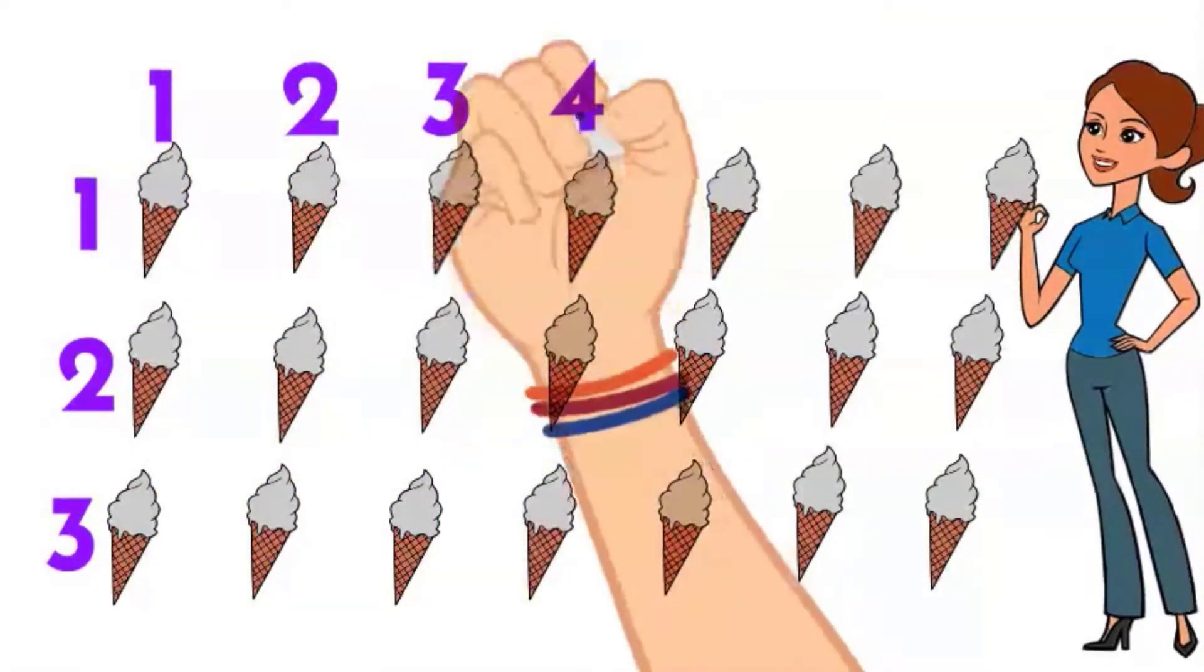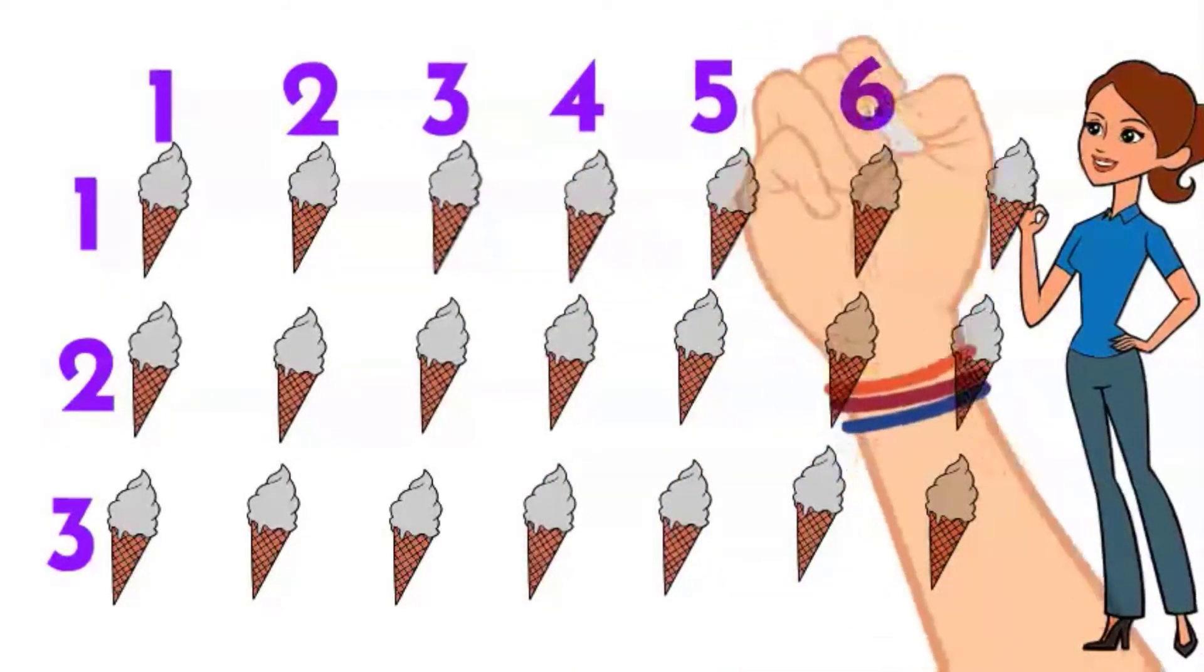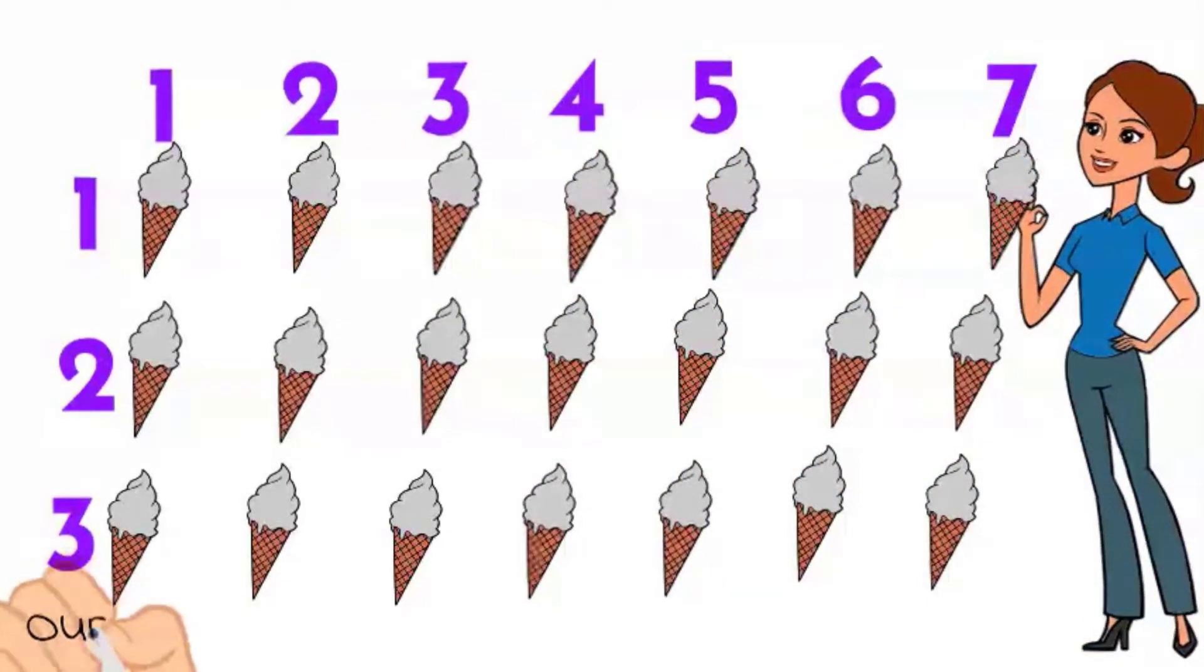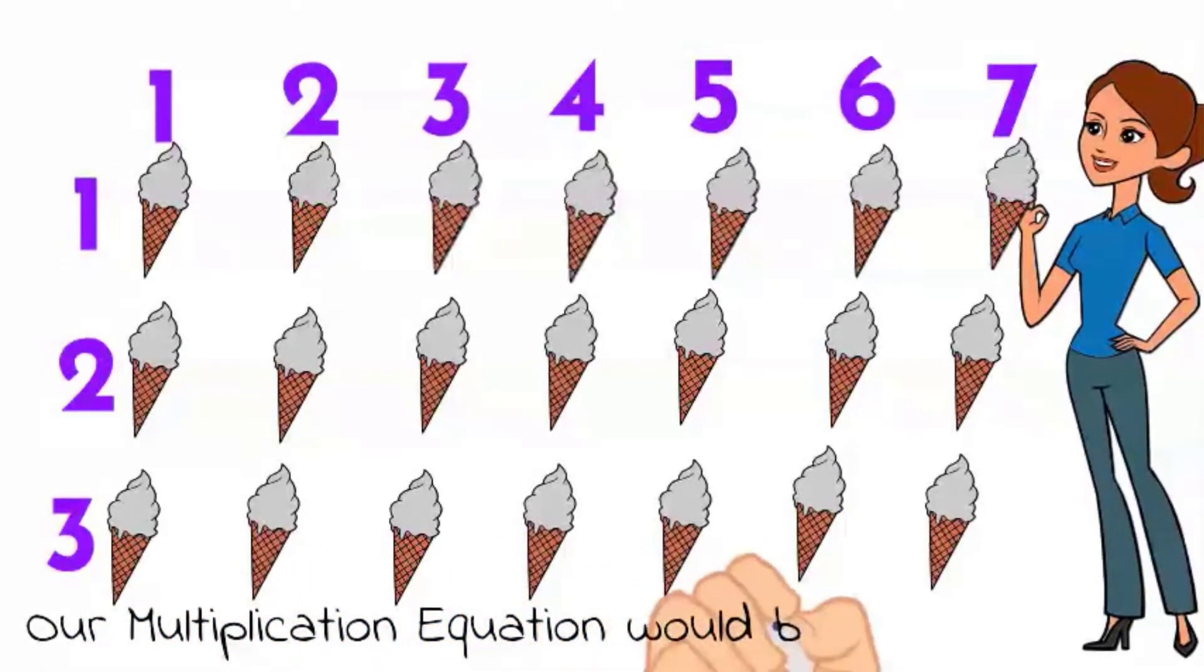It's arranged in three rows and one, two, three, four, five, six, seven columns. So our multiplication equation is three rows times seven equals twenty-one.